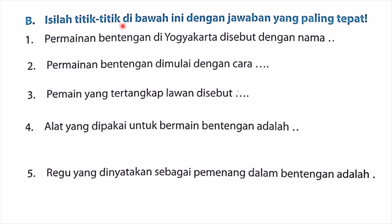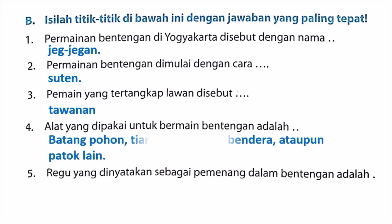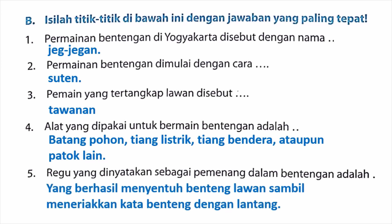Bagian B: Isilah titik-titik di bawah ini dengan jawaban yang tepat. Satu, permainan bentengan di Jogja disebut dengan nama Jekjekan. Dua, permainan bentengan dimulai dengan cara suiten atau suit. Tiga, pemain yang tertangkap lawan disebut tawanan. Empat, alat yang dipakai untuk bermain bentengan adalah benteng berupa pohon, tiang listrik, tiang bendera, ataupun patok lainnya. Lima, regu yang dinyatakan sebagai pemenang adalah yang berhasil menyentuh benteng lawan sambil meneriakkan kata 'benteng' dengan lantang.